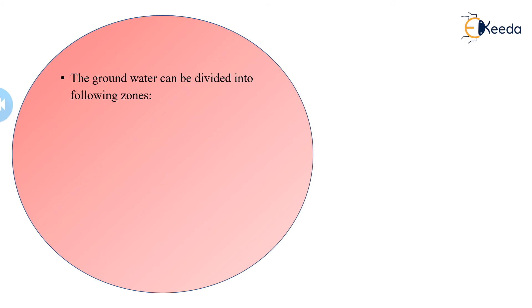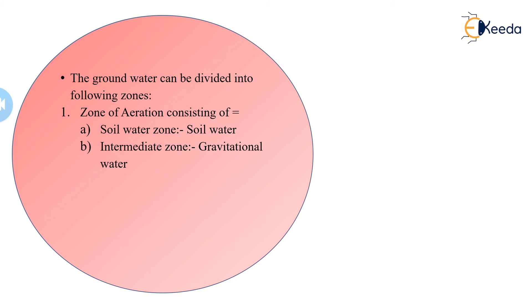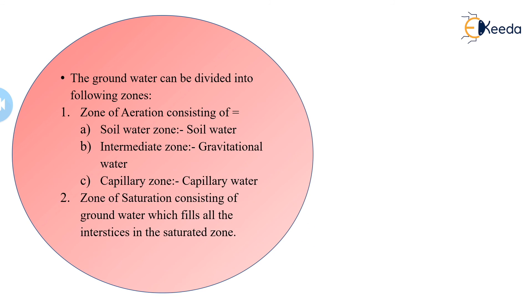To summarize, the groundwater zone is divided into two types: the zone of aeration and the zone of saturation.